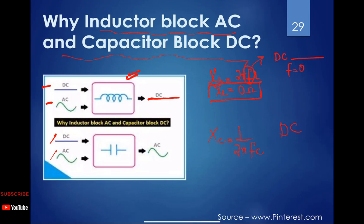If I put this value in this equation, the whole denominator becomes 0 and XC will be infinity. That means it's going to offer extremely high resistance which is infinity, so therefore DC will be blocked.